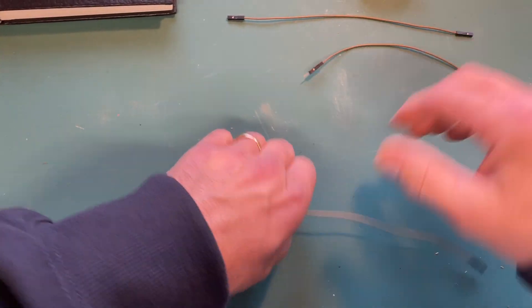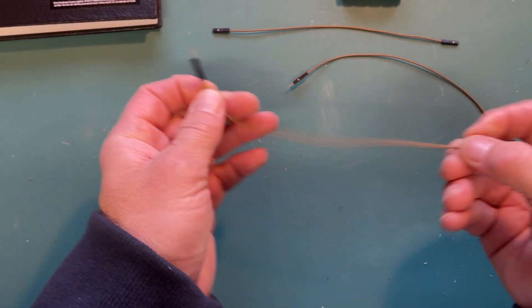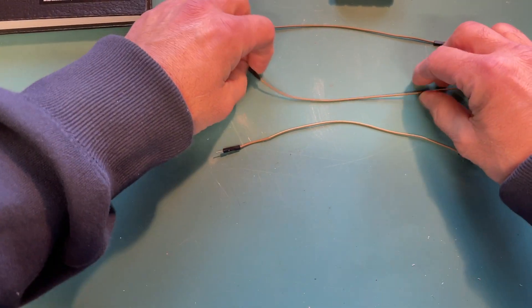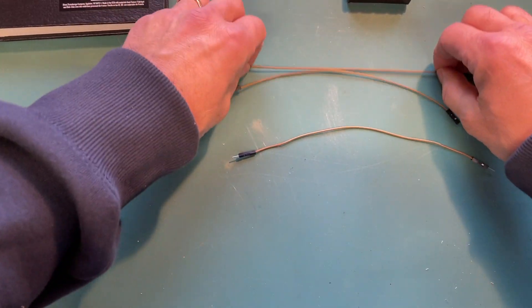And then there's one with a pointy wire coming out of both ends. These are all the same color but they're all different types of wire.